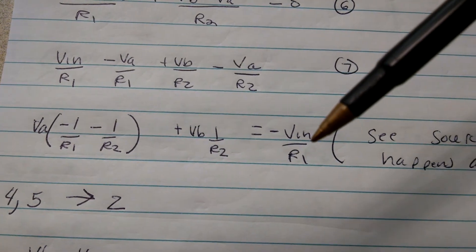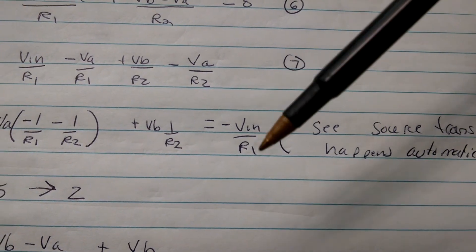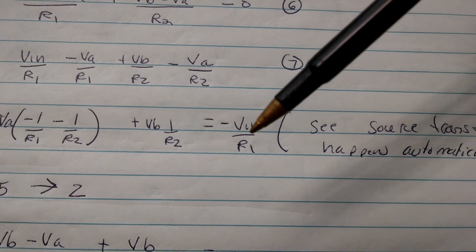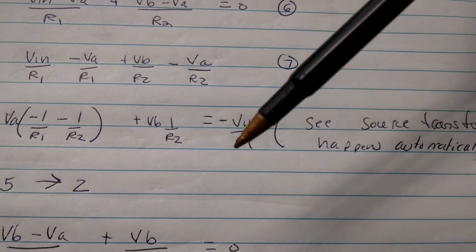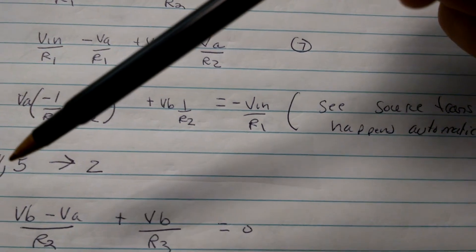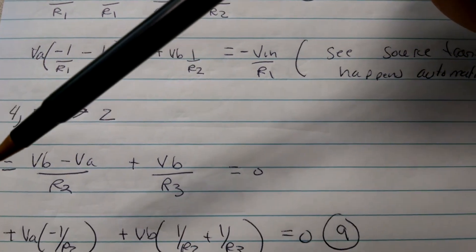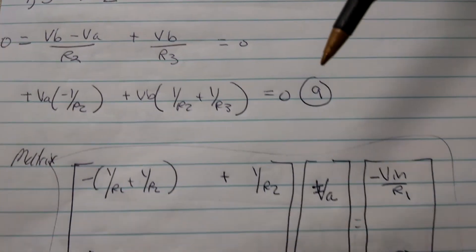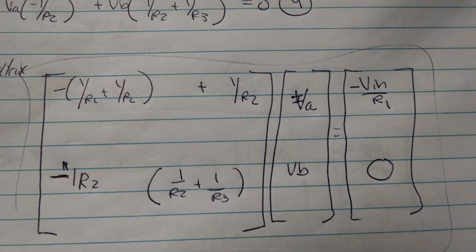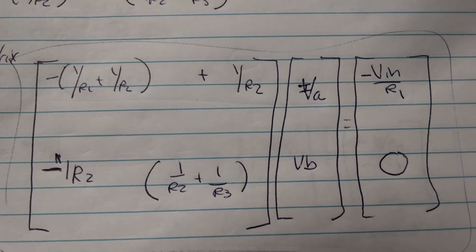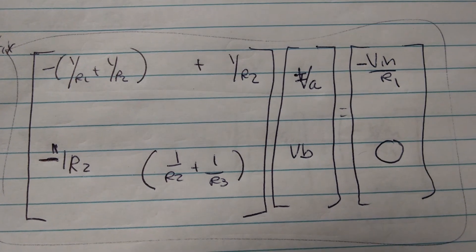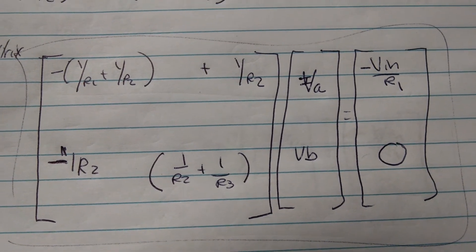And you get this. You can see that the voltage source and R1 — the source transformation — just happens automatically. Putting four and five into two, doing some algebra, I get equation nine. Then I put it into matrix form so that we can compare it to another form rather than actually solve it.